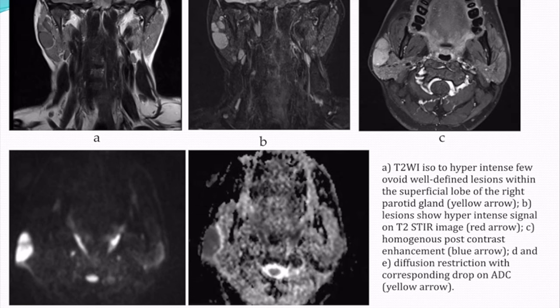Coronal and axial MRI sequences showed T2-weighted iso- to hypo-intense well-defined lesions within the superficial lobe of the right parotid gland. The lesions showed hyperintense signal on T2-STIR images, homogenous post-contrast enhancement, and true diffusion restriction. Based on multiplicity and imaging findings, the diagnosis given was Warthin's tumor; however, on histopathological examination it came out to be unicentric Castleman's disease.